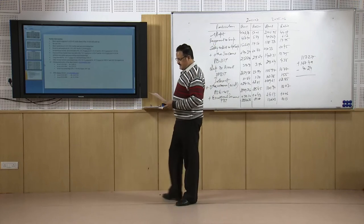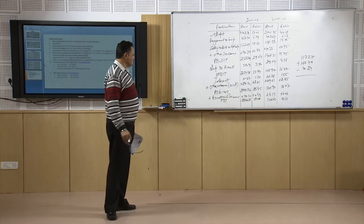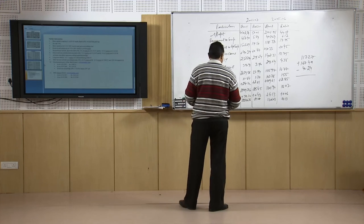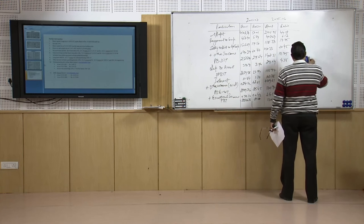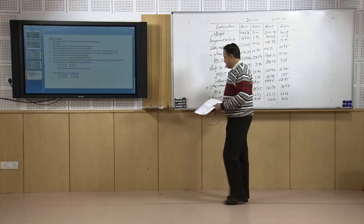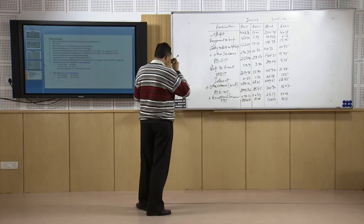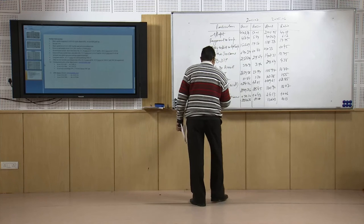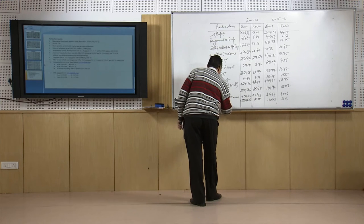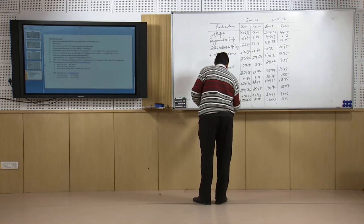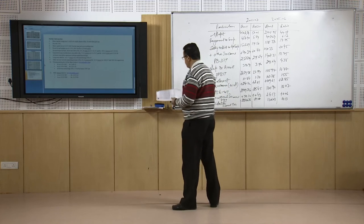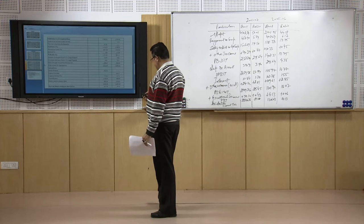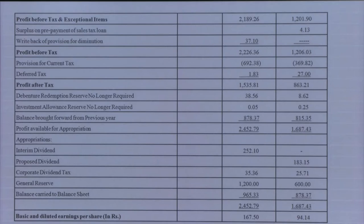Now we make provisions for tax. There are two kinds of taxes: current tax and deferred tax. The provision for current income tax is 692.38 crores at 8.05 percent for the current year, and 369.82 crores at 5.56 percent for the previous year.